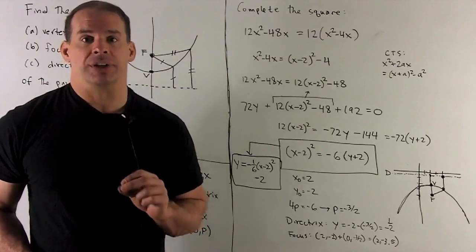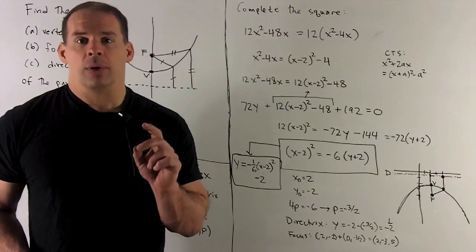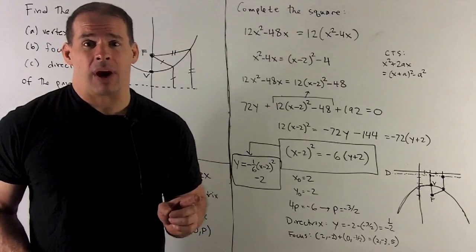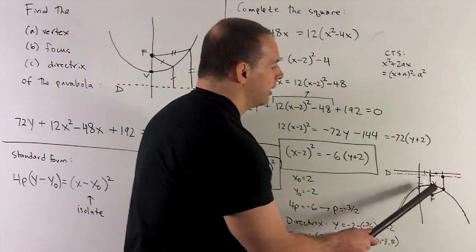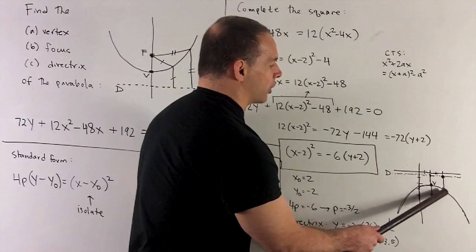So, that's the answer to the question. Now, just to recap, our directrix and our focus give us everything we need about the parabola. Just remember, if I have any point on the parabola, distance from focus to that point is equal to distance from that point to directrix.